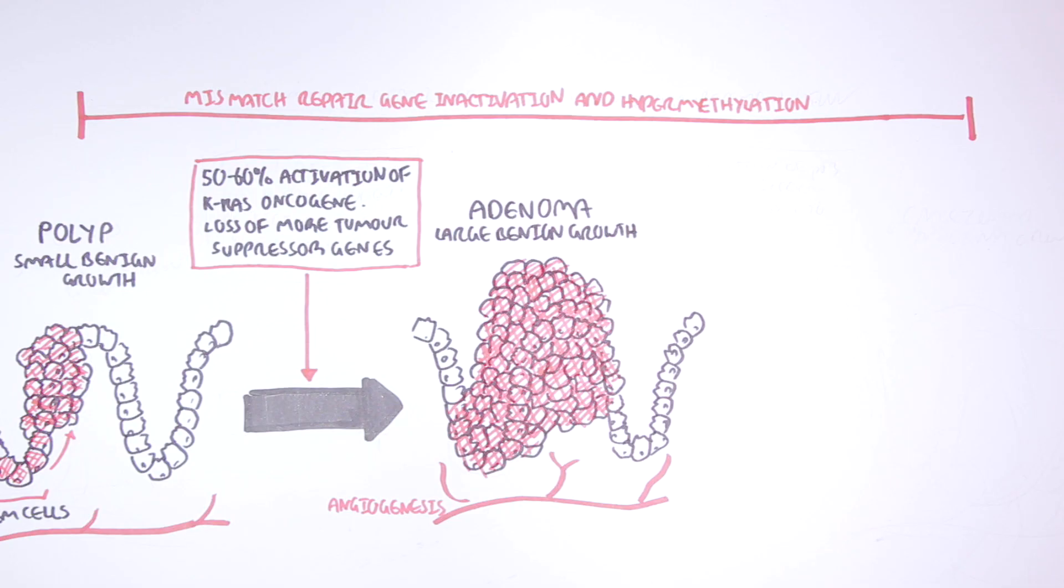Both mismatched repair gene inactivation and hypermethylation can result in mutation rates that are a hundred times fold greater than mutation rates that occur in normal cells. Which is a lot of mutations.